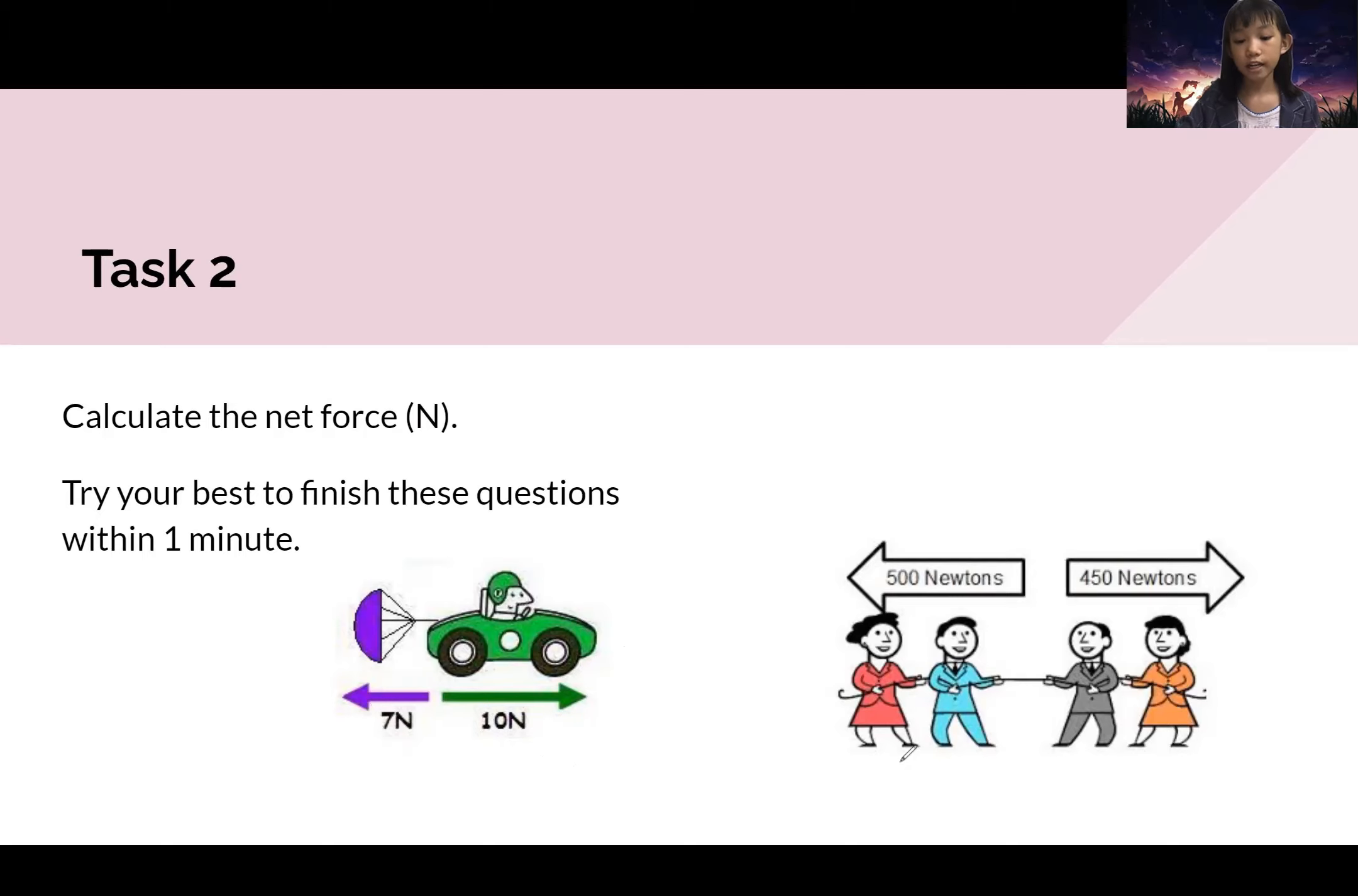And as for the second question, you have 500 newtons versus 450 newtons, which will give us 50 newtons to the left. Because 500 newtons minus 450 is 50 newtons. And since 500 newtons is much more powerful than 450 newtons towards the left, therefore the answer would be 50 newtons to the left.